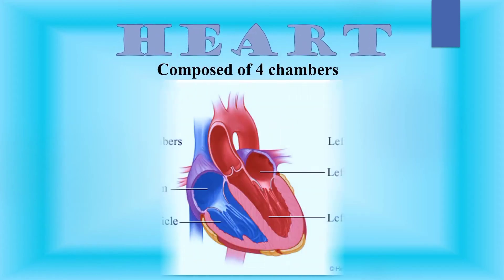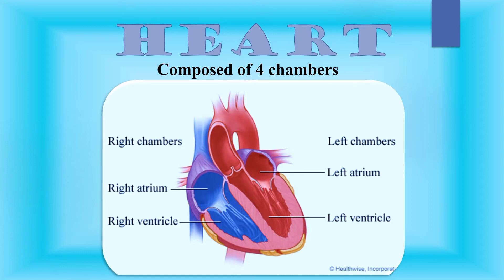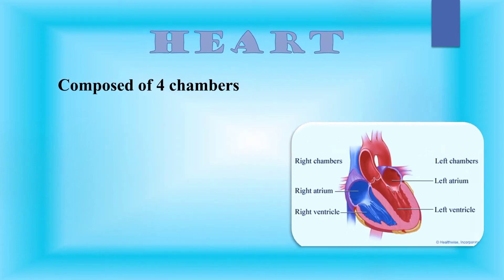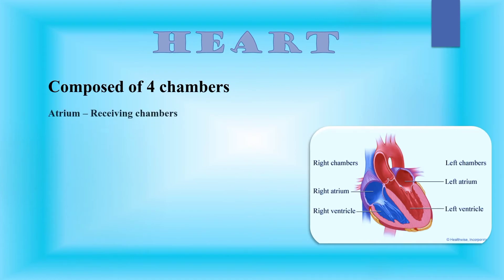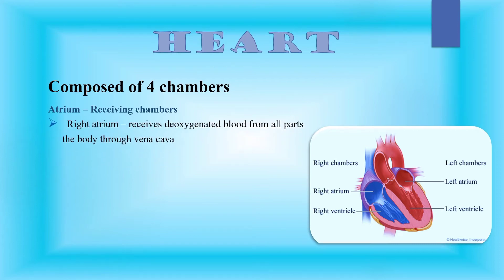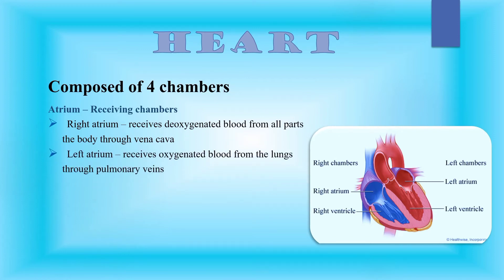Our heart is composed of four chambers: we have the right atrium, left atrium, right ventricle, and left ventricle. Atria are the receiving chambers of our heart. These chambers are thin-walled. The right atrium receives the deoxygenated blood from all parts of the body through the vena cava. On the other hand, the left atrium receives oxygenated blood from the lungs through the pulmonary veins.